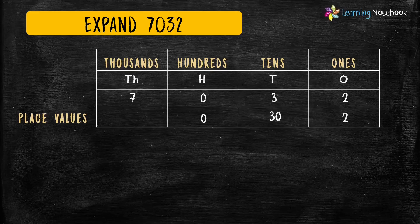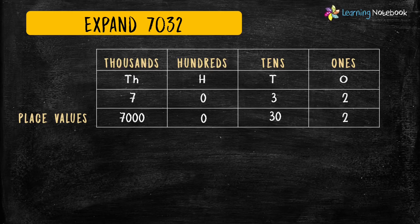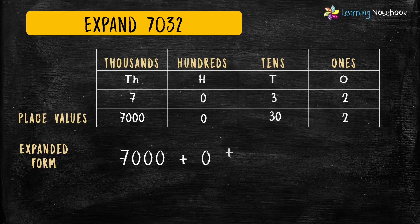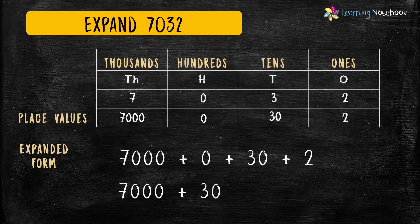Students, please note that the place value of digit 0 always remains 0 at all the places. The place value of 7 is 7000. Now let's write the expanded form of this number, which is 7000 plus 0 plus 30 plus 2. Or, we can write it as 7000 plus 30 plus 2. Both ways to write the expanded form for this number are correct.